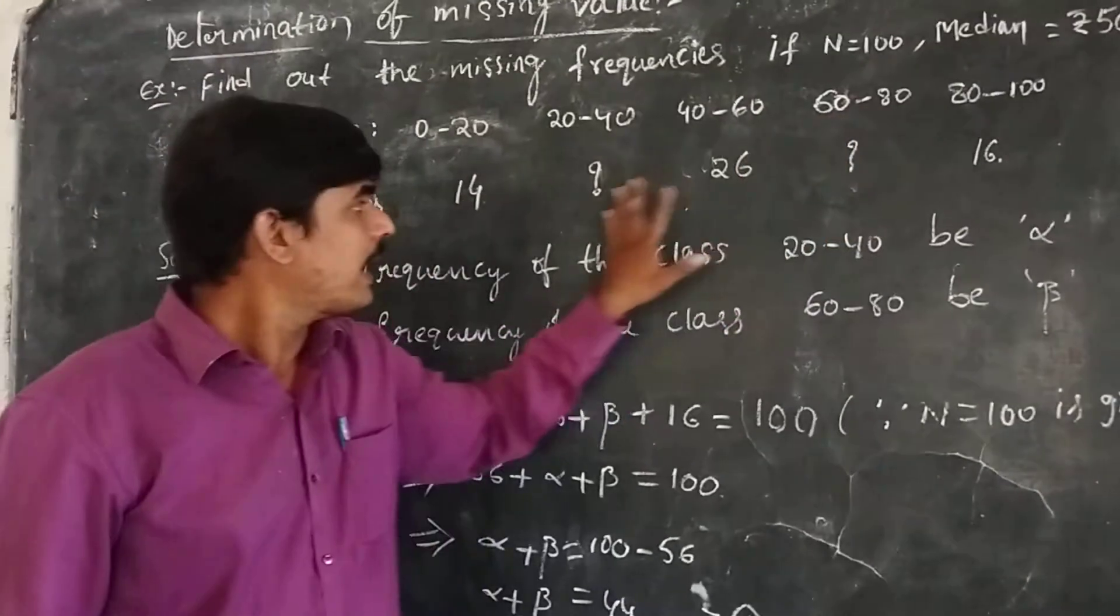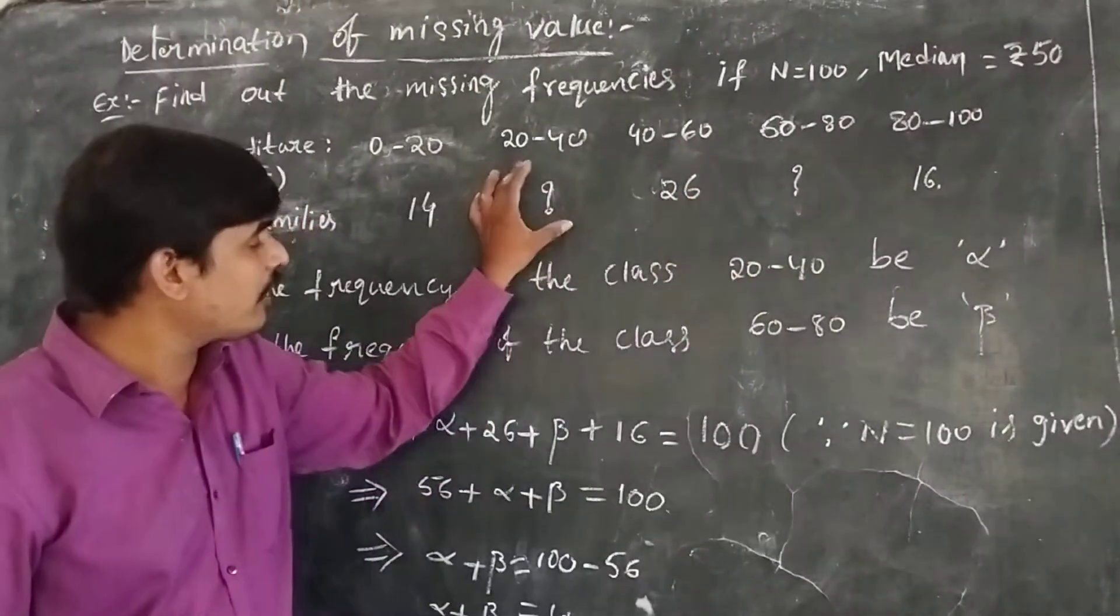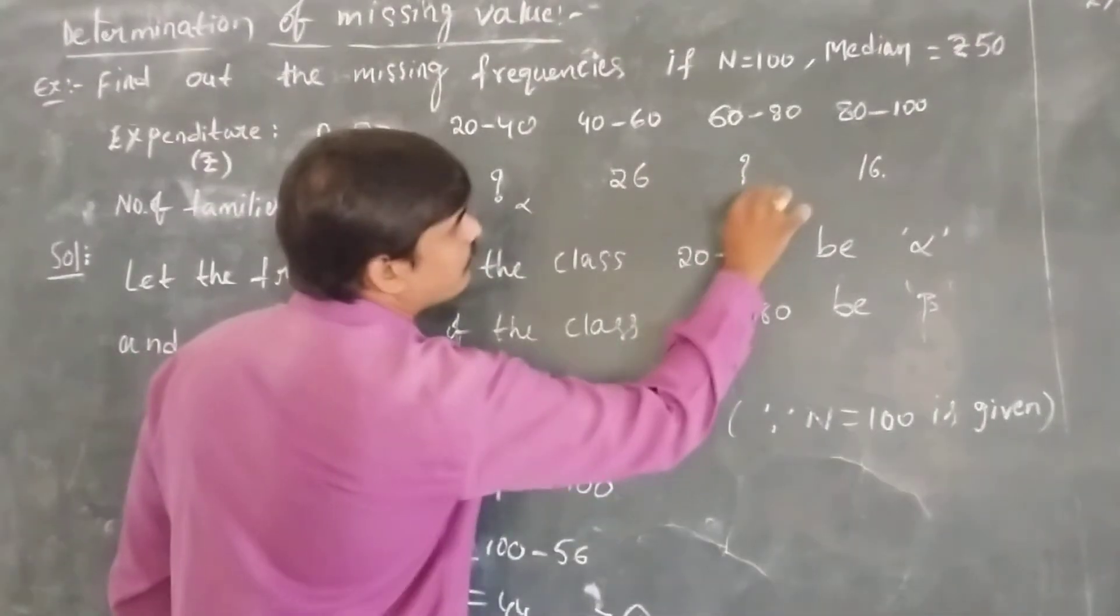To find these two frequencies, we are going to represent them. Let one value be alpha and the other be beta.